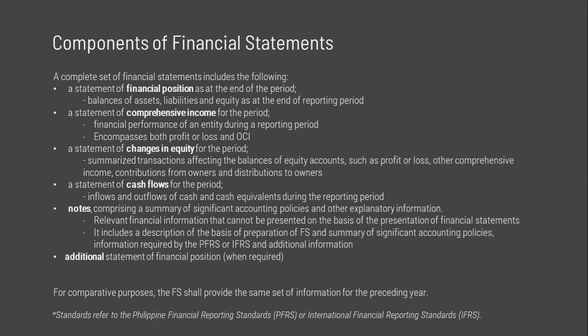The statement of profit or loss and other comprehensive income may be presented in two manners: as a single statement of profit or loss and other comprehensive income, or as two separate statements — first, a statement of profit or loss (income statement), and second, a statement presenting comprehensive income. Profit or loss is income less expenses, excluding components of other comprehensive income. The excess of income over expenses is profit, while a deficiency is a loss. This method of computing profit or loss is called the transaction approach. Income and expenses are usually recognized in profit or loss unless they are items of other comprehensive income or required by other IFRS to be recognized outside of profit or loss.